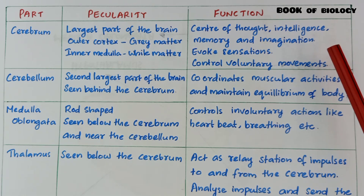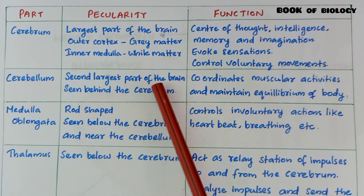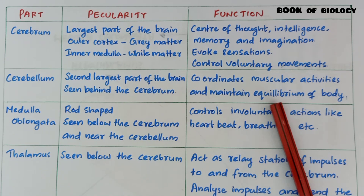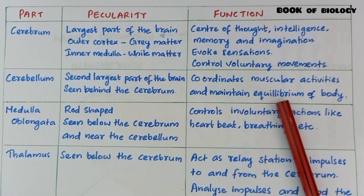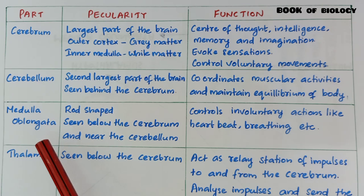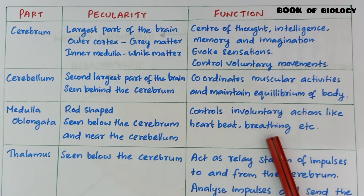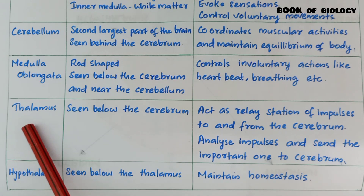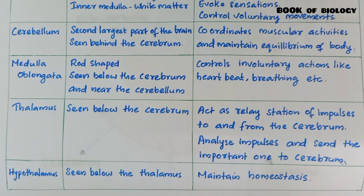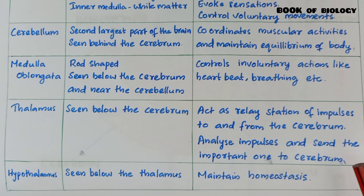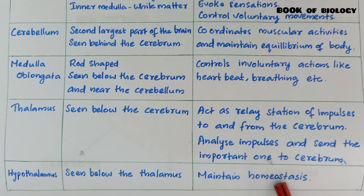Cerebellum: second largest part of the brain, seen behind the cerebrum; coordinates muscular activities and helps in maintaining equilibrium of the body. Medulla oblongata: rod-shaped, seen below the cerebrum and near the cerebellum; controls involuntary actions like heartbeat and breathing. Thalamus: seen below the cerebrum; acts as a relay station of impulses to and from the cerebrum; analyzes impulses and sends the important ones to the cerebrum. Hypothalamus: seen below the thalamus; maintains homeostasis.